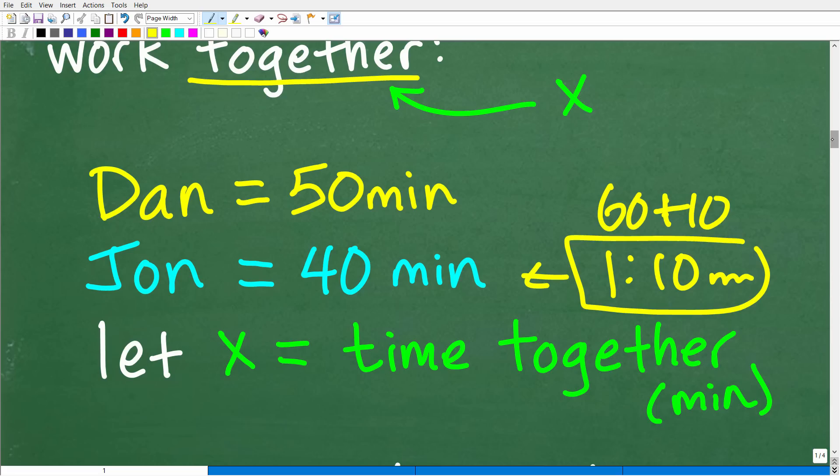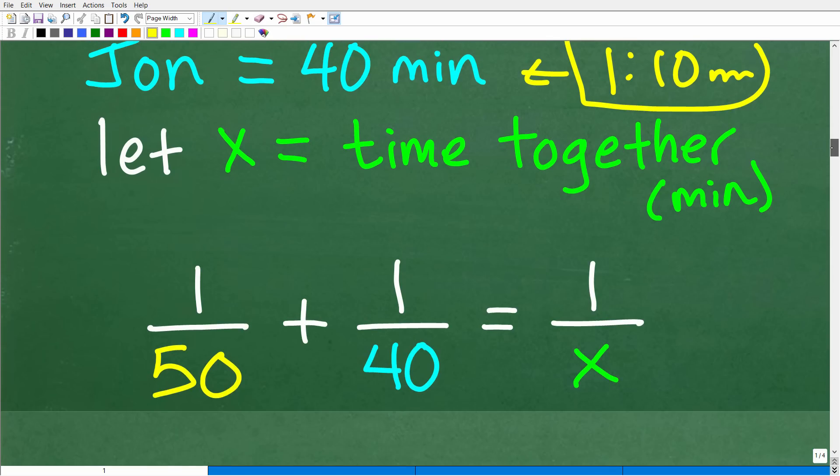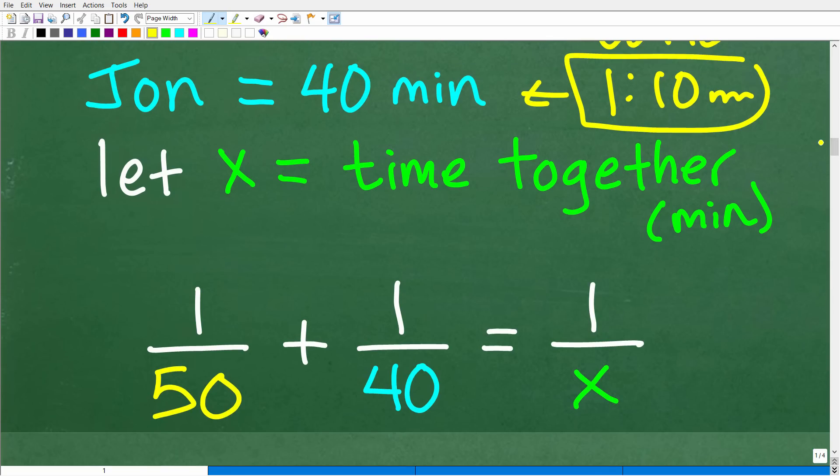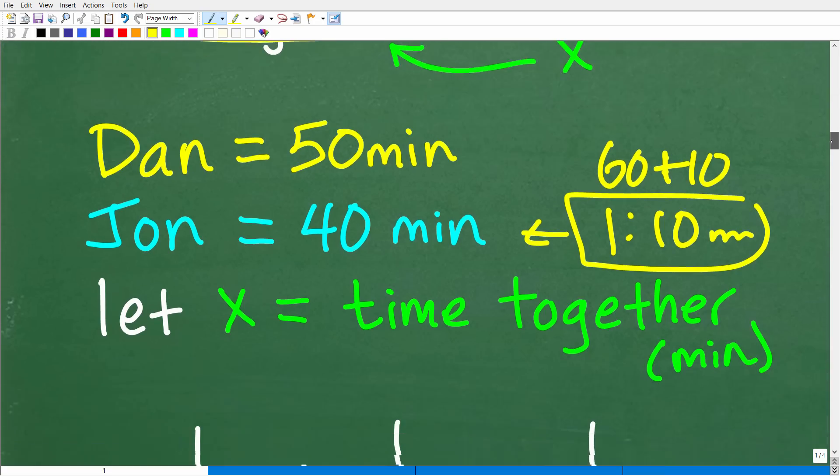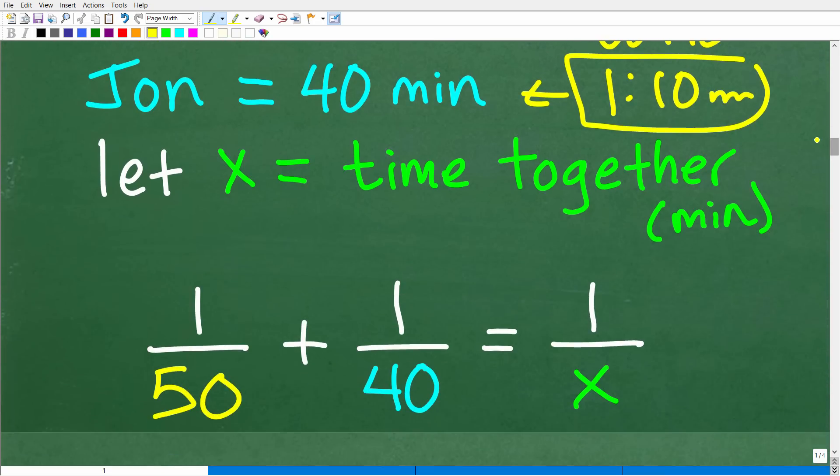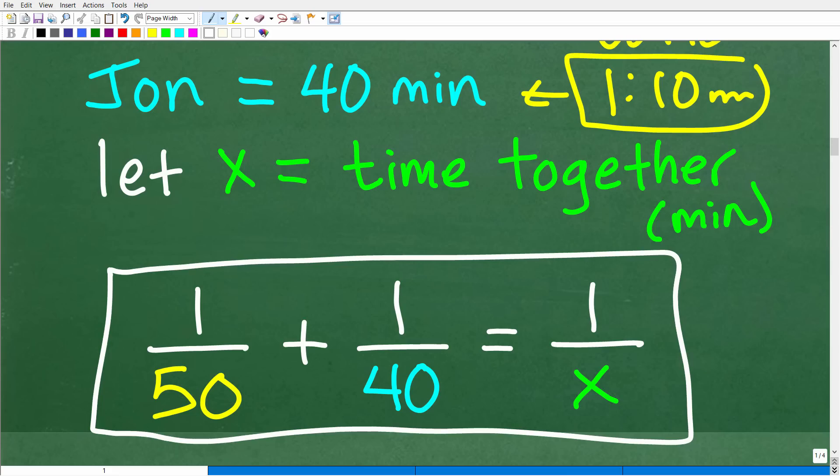Now what we're going to do is we're going to set up our little formula here. So 1 over 50 would represent Dan. He can complete one job, complete that one task in 50 minutes. John can complete that one task in 40 minutes. And together they can complete that one task in X amount of minutes. So what we've done here is translated this situation into a lovely algebra equation.